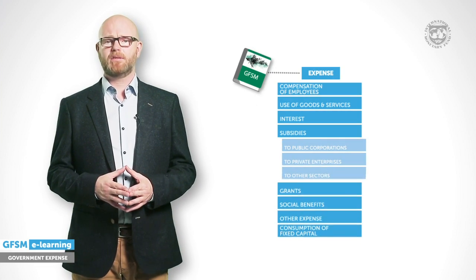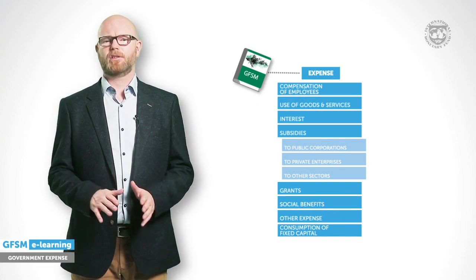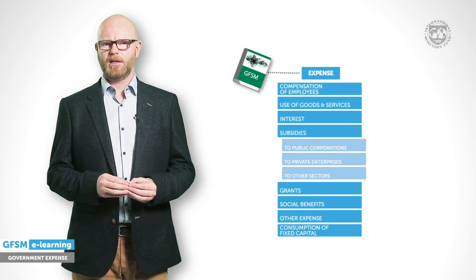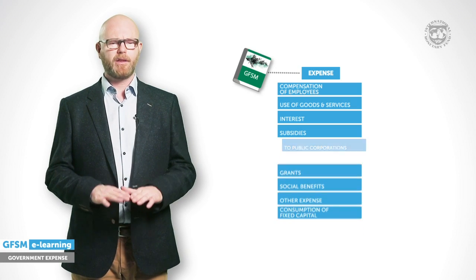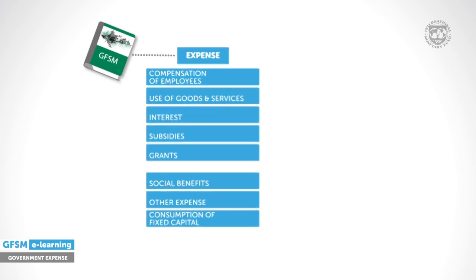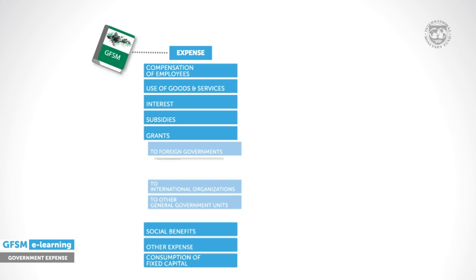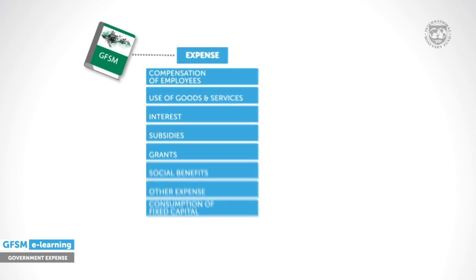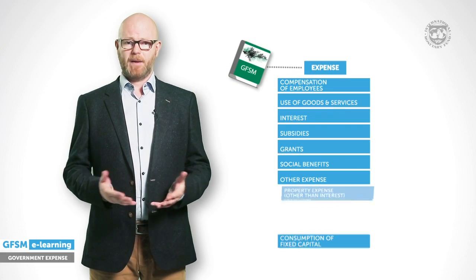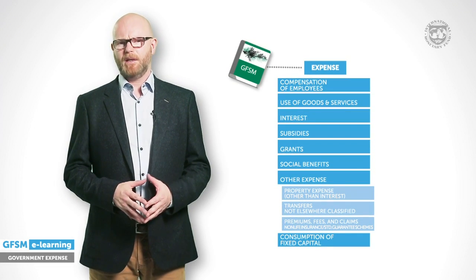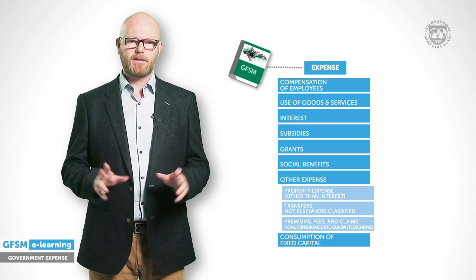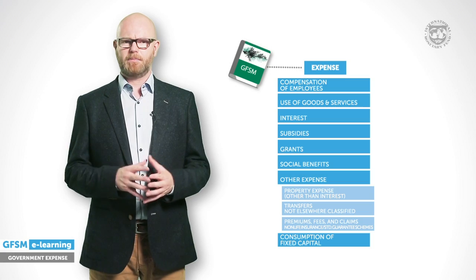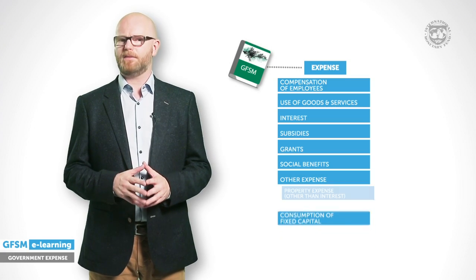Subsidies are recurrent payments to corporations and cover current production costs. Transfers for investment purposes or debt restructuring are not included here but in a separate category under other expenses. Grants comprise current and capital transfers to foreign governments, international organizations, and other general government units. Other expenses are typically small in value; they cover all transfers not elsewhere classified and some other smaller items. A large value in relation to total expense may indicate an error in classification.